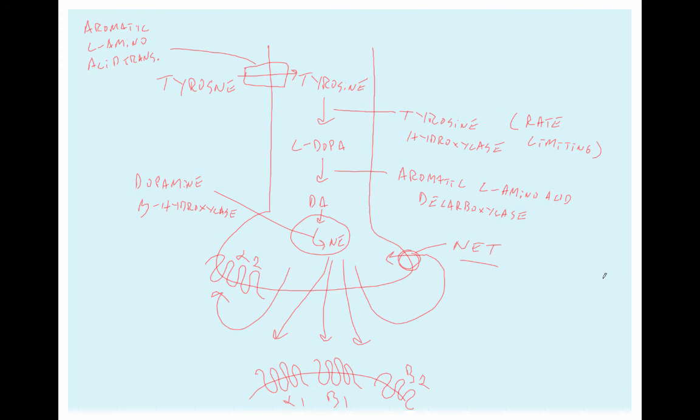And again, don't forget all the postsynaptic receptors that I showed here. Alpha-1, beta-1, and beta-2 are also linked to G proteins, but in these cases, they're stimulatory or activating G proteins, such as GS or GQ.